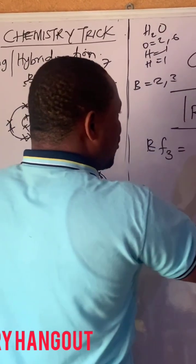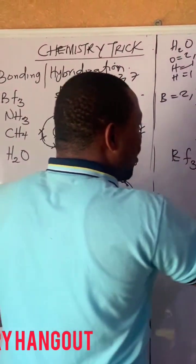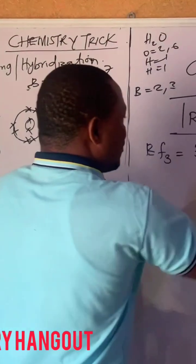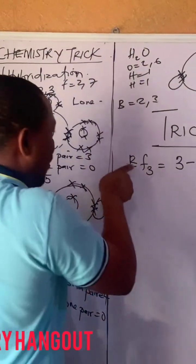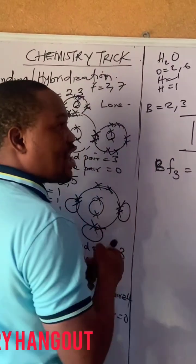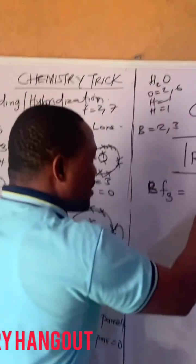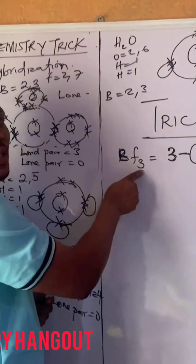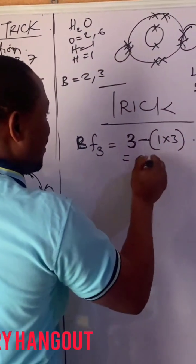It needs 1. So it will be 1 times how many of it? 3 of it. I want you to believe this is clear. I got boron from the group number 3 minus how many electrons fluorine used to collect, 1. This is 1 times how many of it? 3. So it becomes 3 minus 3.